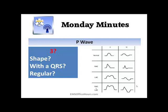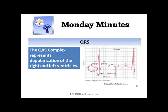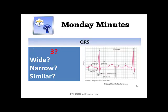Now we move on to the QRS. The QRS complex represents the depolarization of the right and left ventricles. When we look at it, there are three questions you want to ask yourself, primarily looking at the QRS, to set off bells that something is not right.